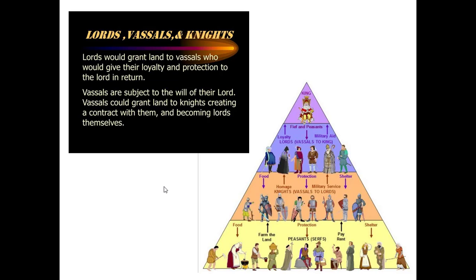In the European feudal system, the King at the top gives lords below him fiefs — land grants — and peasants. Whatever land grant a lord gets from the king, whoever lives on that land becomes his peasant and does his bidding. In return, the lords offer the king their loyalty and military aid: if there's going to be a war, I will fight for you because you gave me land. Below the lords are the knights — not quite peasants, they have upward mobility. The lords give the knights below them food, protection, and shelter; in return the knights give their homage, loyalty, and military service.